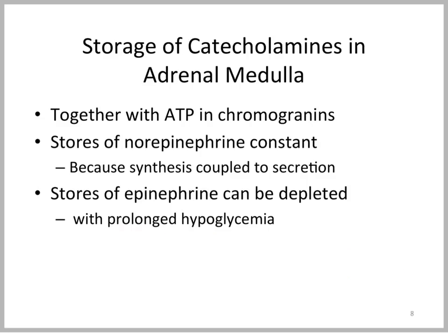After synthesis, catecholamines — epinephrine and norepinephrine — are stored with ATP in what are called chromogranins. The norepinephrine granule stores remain relatively constant because synthesis is coupled to secretion and is constantly replenished, whereas the stores of epinephrine can be depleted. This can occur during prolonged hypoglycemia, where the animal is trying to respond by releasing epinephrine to stimulate glycogenolysis to produce more glucose, and these granules can become exhausted.